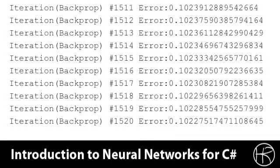We will begin by looking at how we actually implement the training for this program. Let's see how the hybrid training process actually works. Here you see part of the training process. We are looping through iterations using the back propagation algorithm. You can see that the error rate by iteration 1511 is still decreasing, but it's not decreasing terribly fast. This is because the neural network training has entered a local minimum.